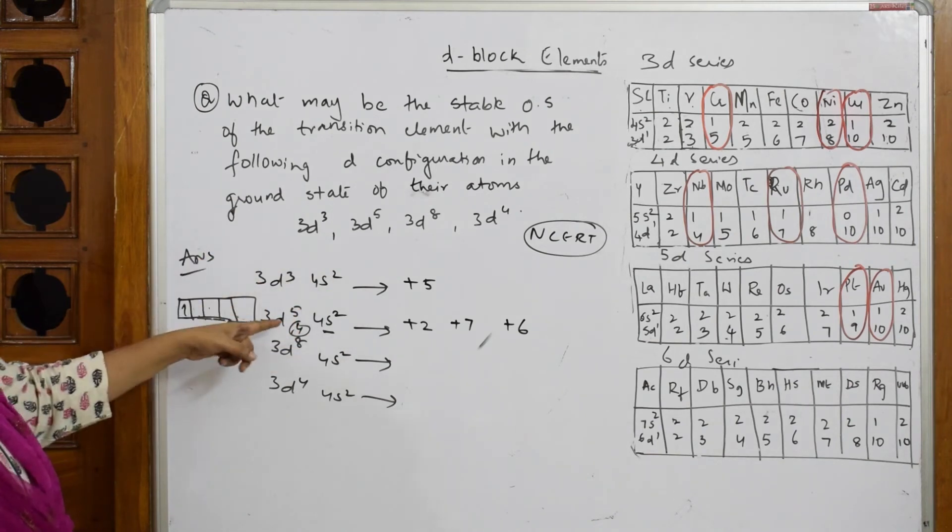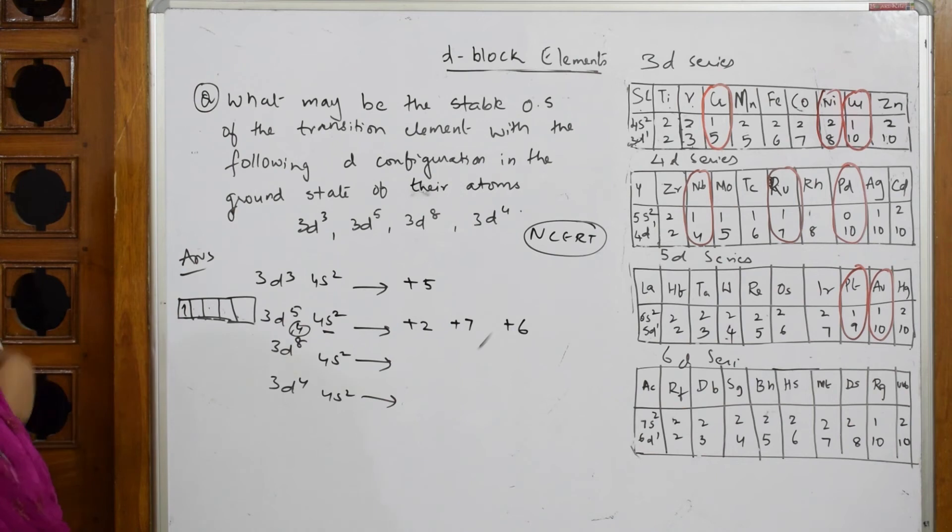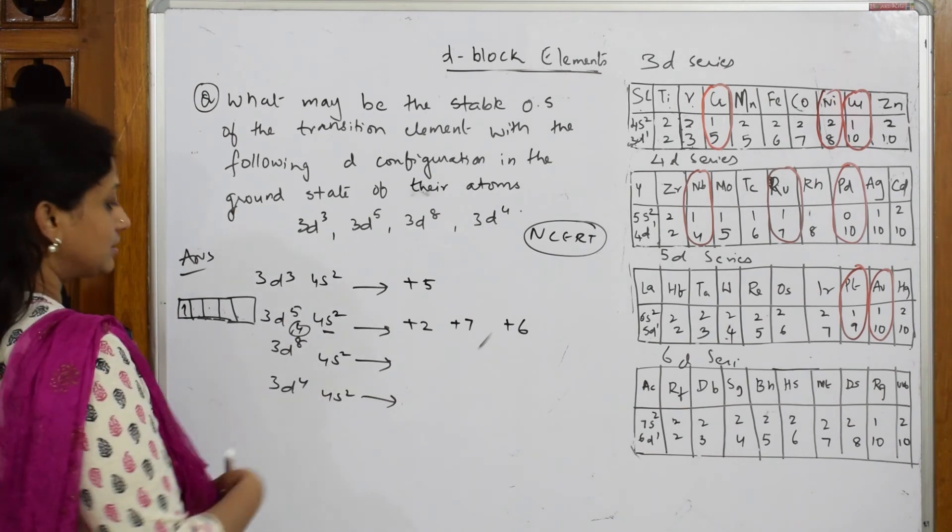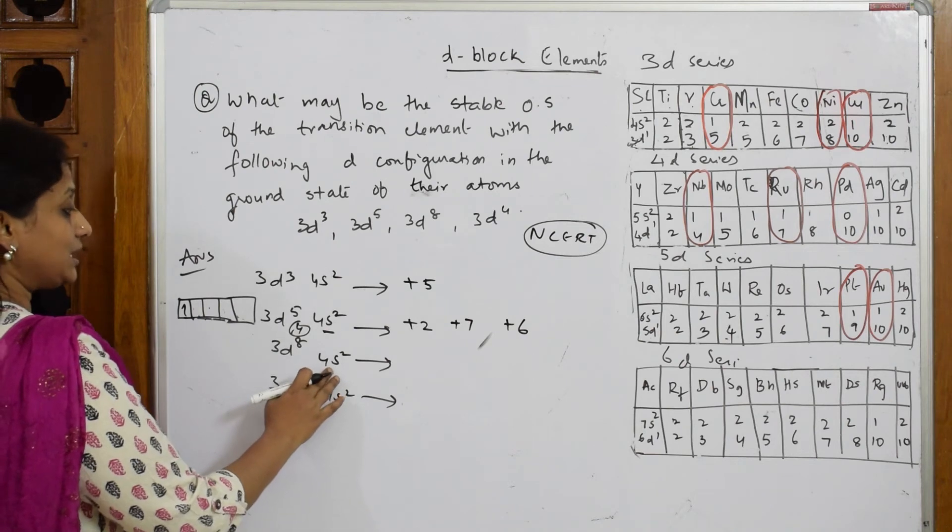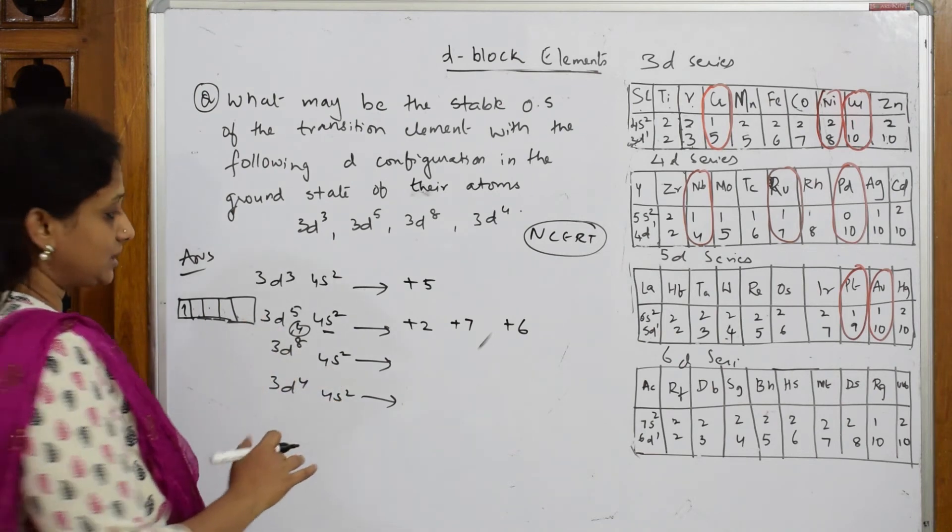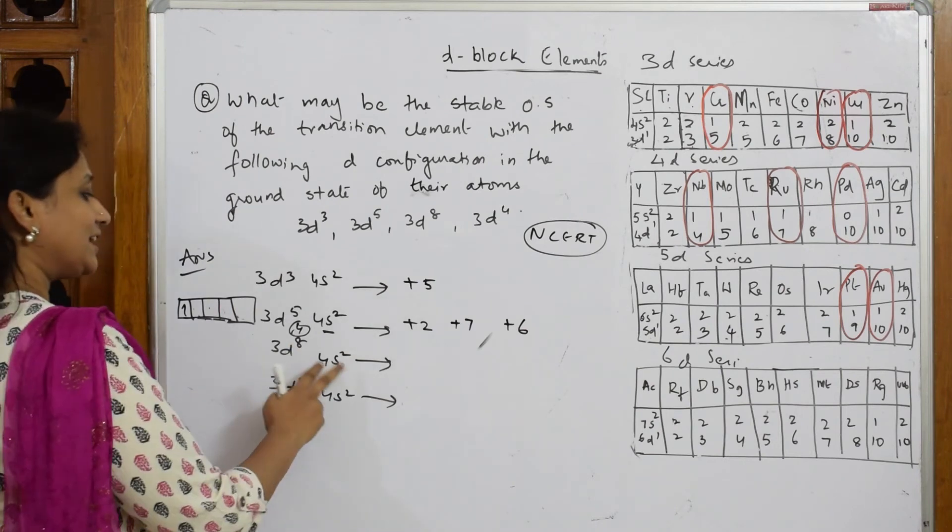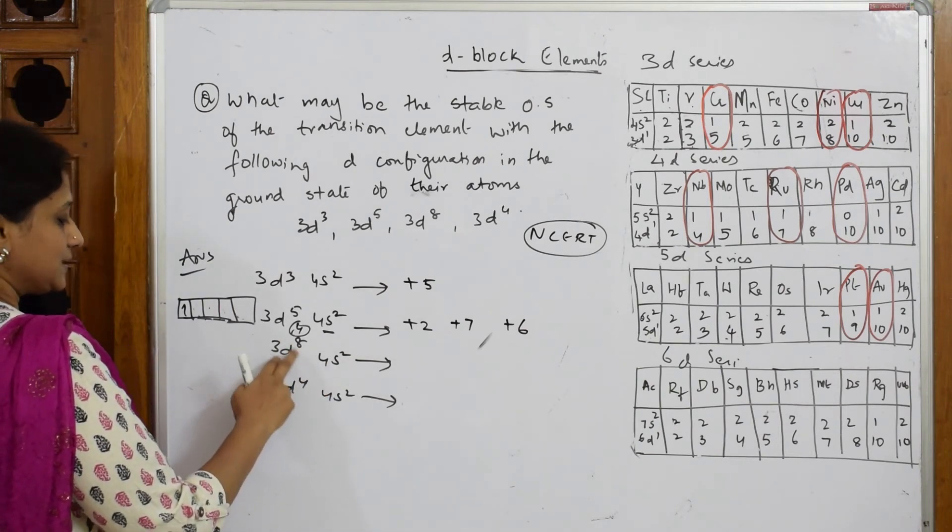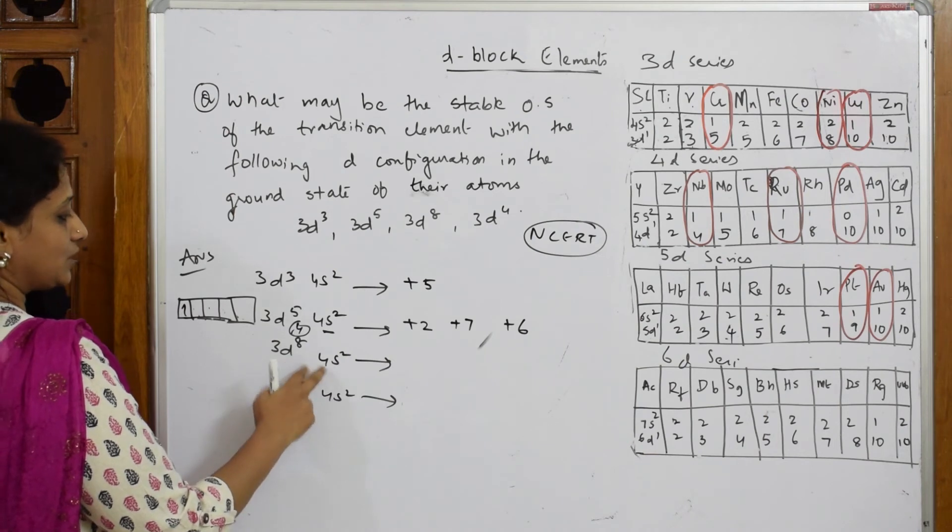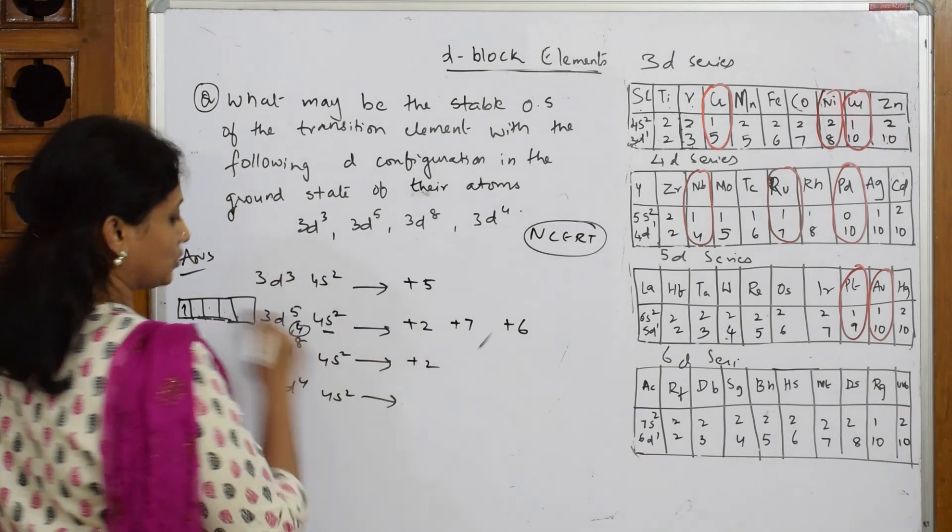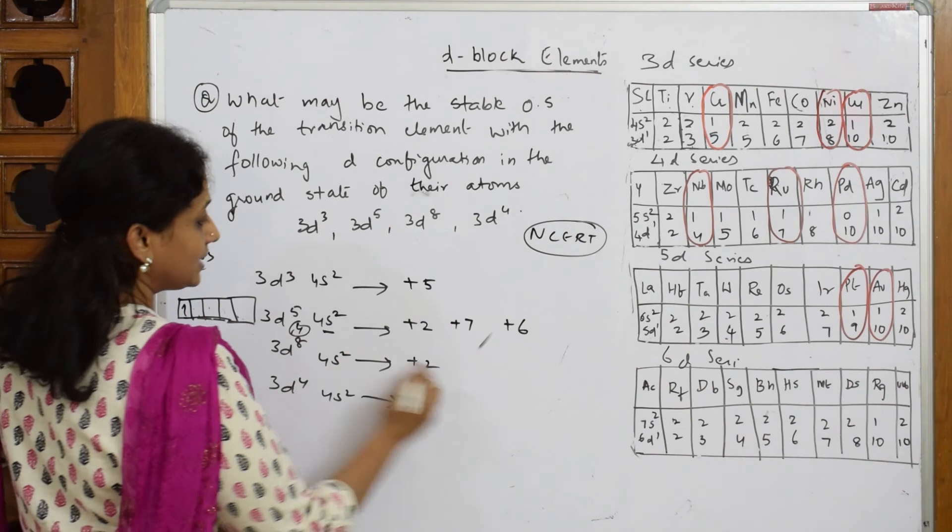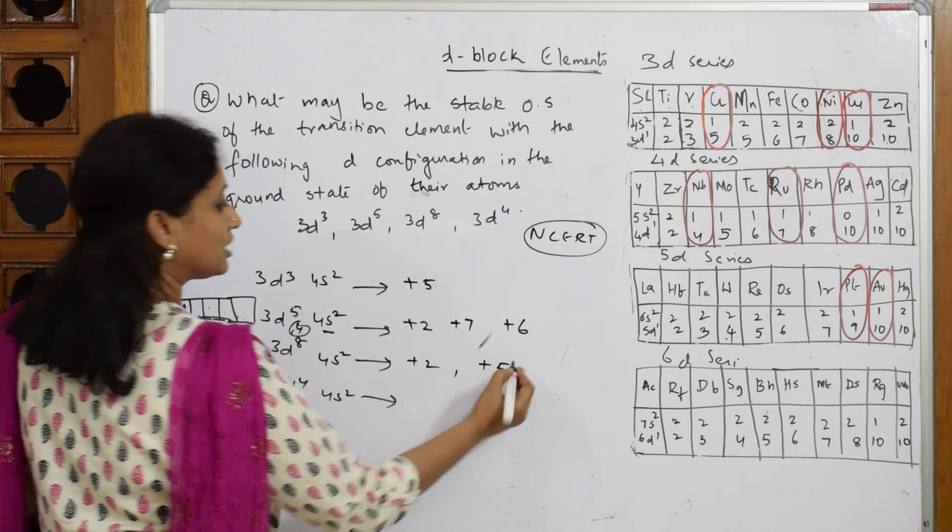Let me see for this. Here, if I have to see the stable configuration, I can take 2 electrons. Can I take one more electron from here? If I write +2, done. Can I write +5 or not? Let me check.